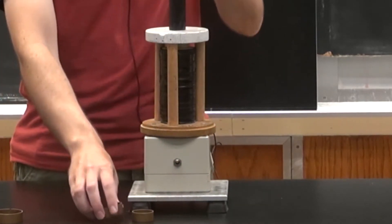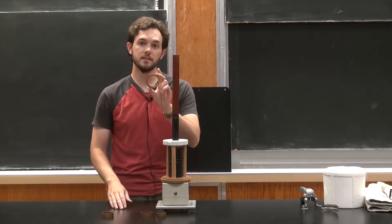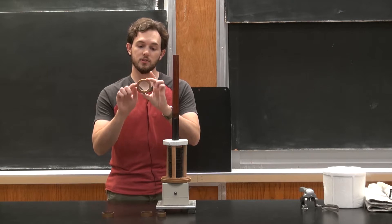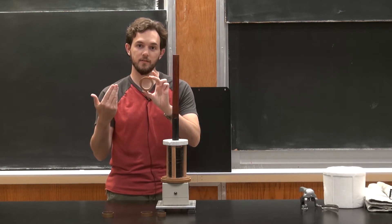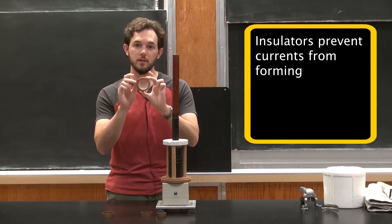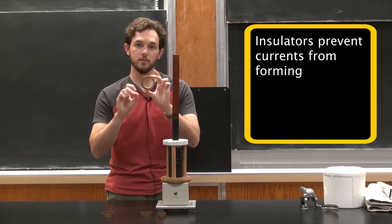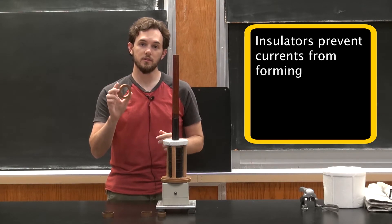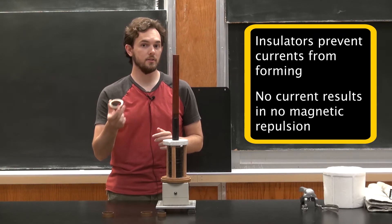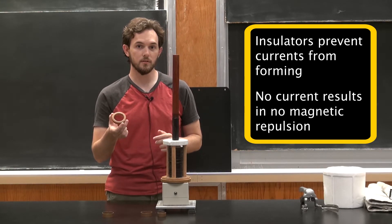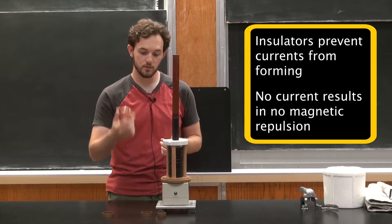It actually doesn't jump at all. And the reason for that is that wood is an insulator. That means although it has a certain area and a certain amount of magnetic field traveling through it, it cannot set up a counteracting current around it. So since no current can flow through the wooden ring, it can't generate a counteracting magnetic field and there is no net magnetic force on the insulator.